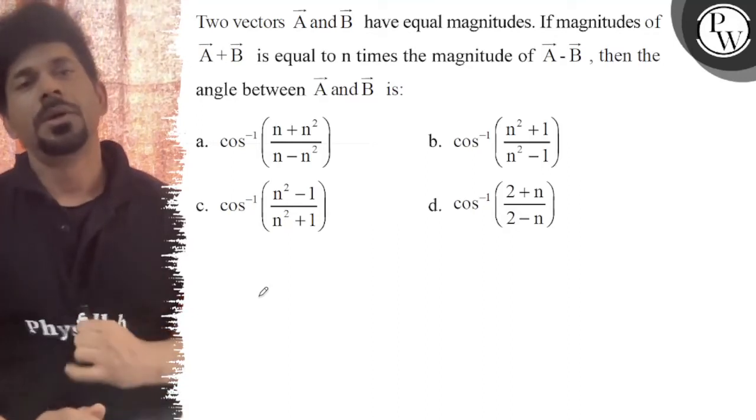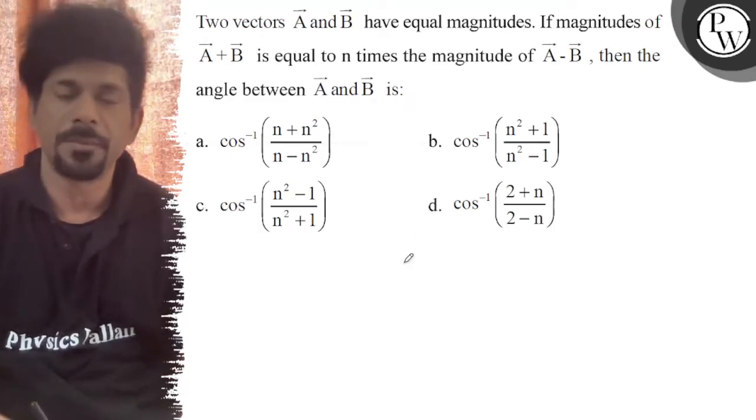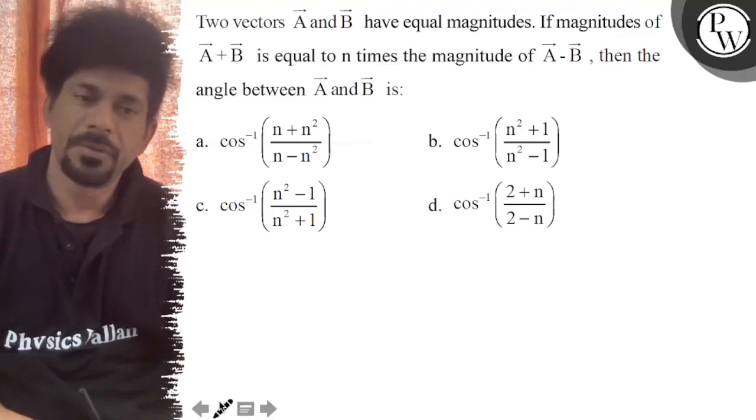Hello guys, let's see the question. Two vectors A and B have equal magnitudes. If magnitude of A plus B is equal to n times the magnitude of A minus B, then the angle between two is.